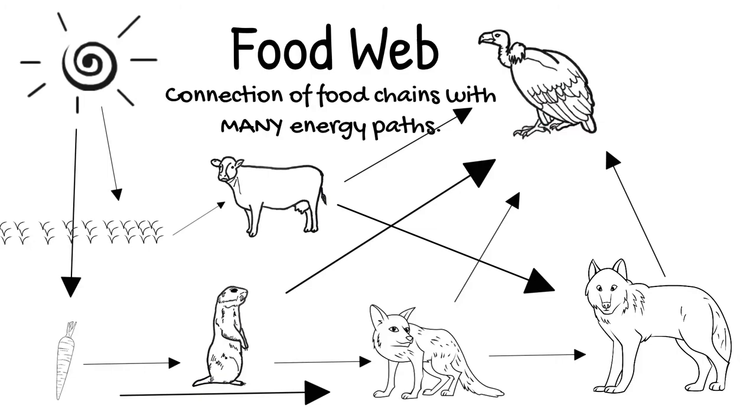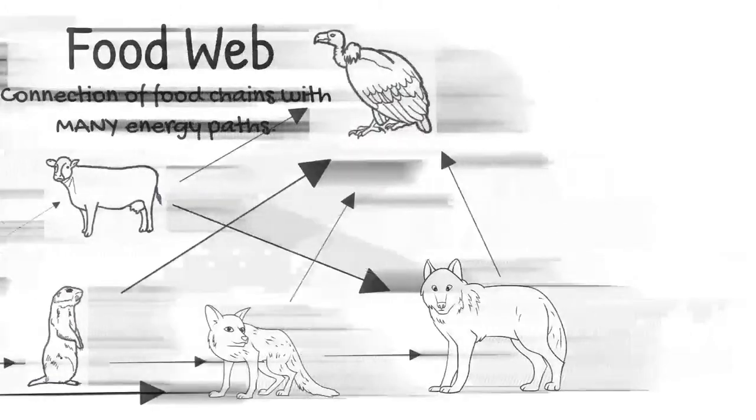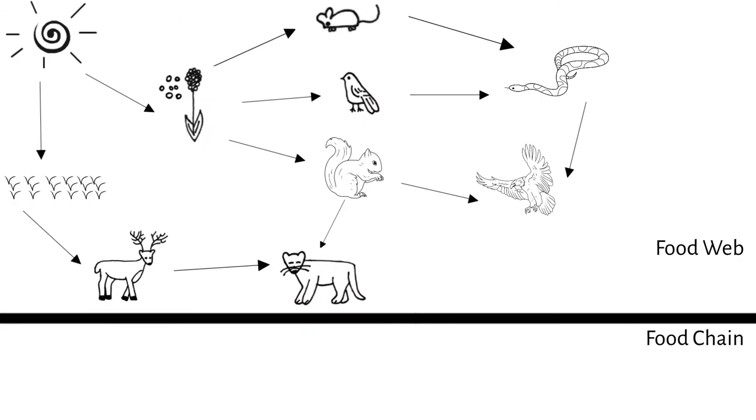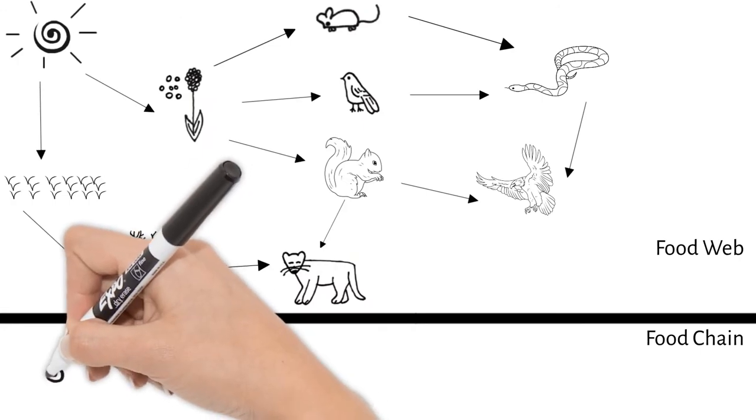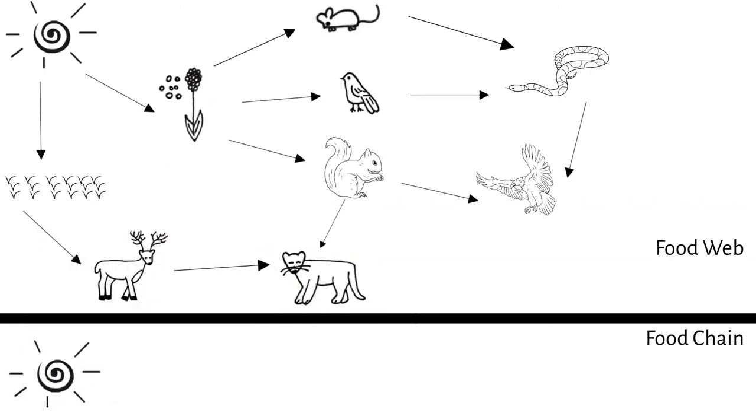While we made a food web from our food chain, you can also pick out food chains from a food web. Looking at this food web, start with the sun of course, and then follow a path of arrows. That will be one path of energy transfer, or a food chain.